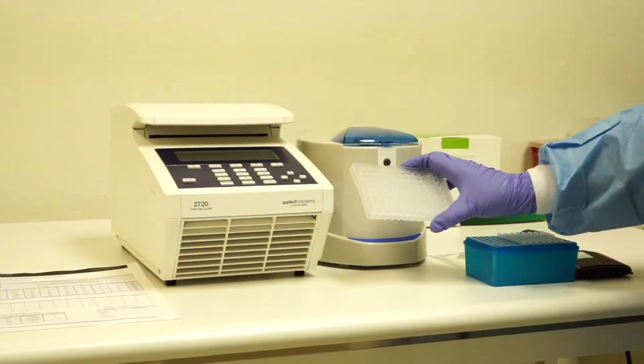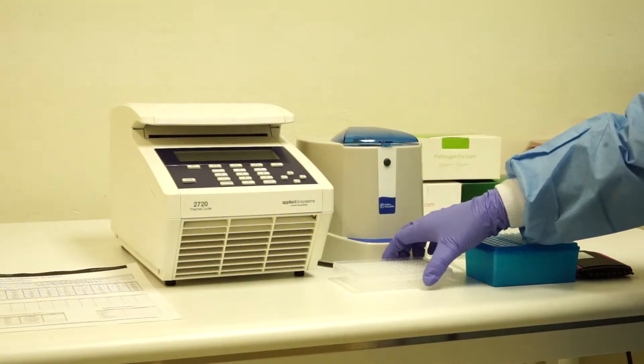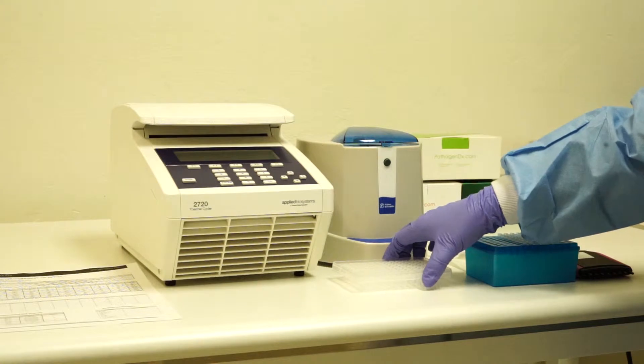Once you've plated your labeling PCR master mix, remove the plate from the PCR area and place in the post-PCR or hybridization area.